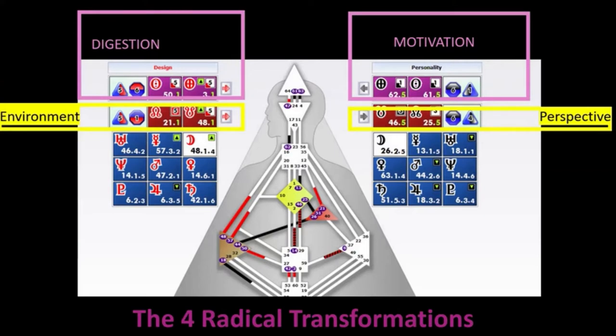So let's talk about how to read your advanced chart. Through this process of the four radical transformations, you begin with understanding how you digest life. Digestion also has to do with what you're eating and how you're taking food in. And we are not all designed to eat alike.